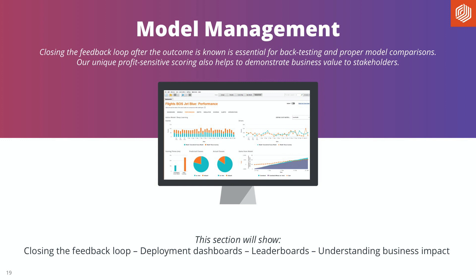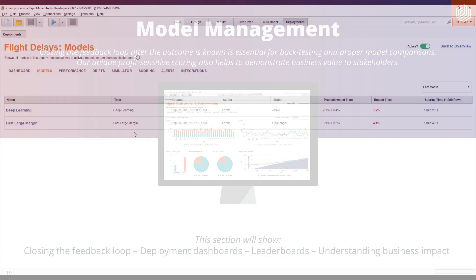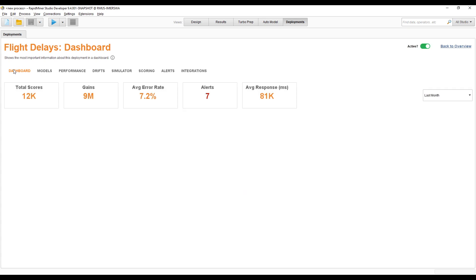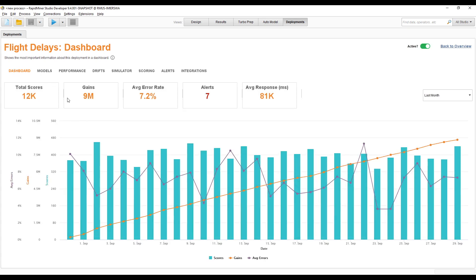Let's dive deeper into model management. With RapidMiner you can close the feedback loop — you can upload actual outcomes or use a web service for that. Closing this feedback loop is essential because if you know the actual outcome after creating the prediction, you can do back-testing and proper model comparisons. I'll show you the deployment dashboards and leaderboards among models, and we'll focus on the performance dashboard which helps you understand the business impact.